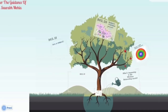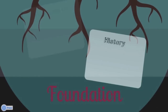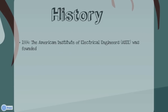Speaking about IEEE, let us go deep into the roots of IEEE. Talking about IEEE history, the very first organization founded was AIEE in 1884. AIEE stands for American Institute of Electrical Engineers. Radio, a new electrical technology, arose in the first decade of the 20th century. It proved to be a major catalyst for the birth of IEEE.